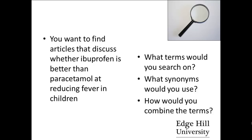The first thing you need to do is think about which keywords you would use to search on, and how else are these keywords described — for example, synonyms. Since authors may talk about the same thing but use different terms: for example, heart attack, myocardial infarction, and MI are all different ways of talking about the same thing.